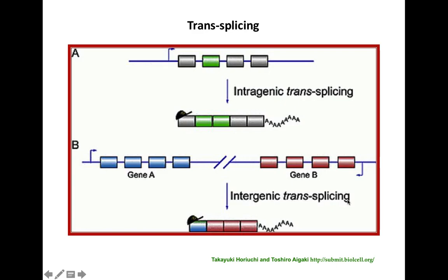The second type is intergenic trans splicing, where the exons or coding sequences come from two different genes. Gene A transcribes its own mRNA molecule and gene B also transcribes its mRNA molecule. One exon is taken from gene A and three exons from gene B, and they are put together to constitute a different type of mRNA molecule. That's what we call intergenic trans splicing.